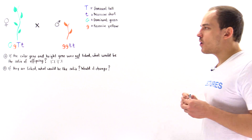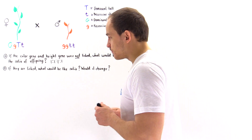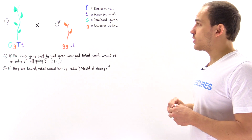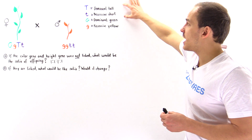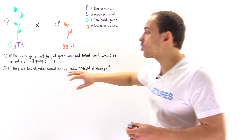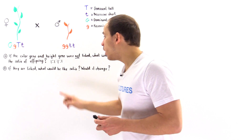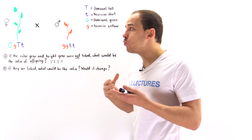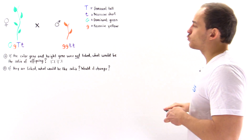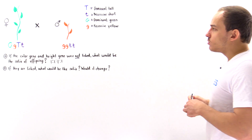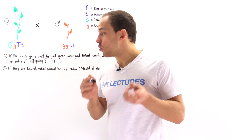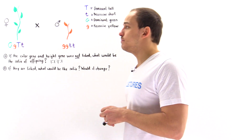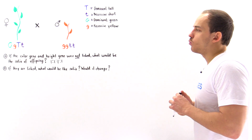Now let's focus on linked genes. In part B, if the height trait and the color trait were in fact linked, what will the ratio be in that case? Would it change or would it remain the same? Let's begin by recalling what it means for two genes to actually be linked with respect to one another.